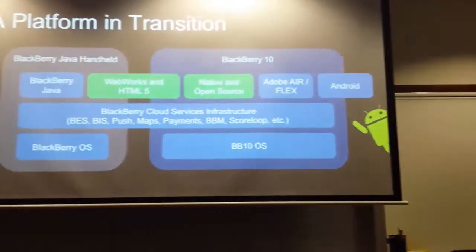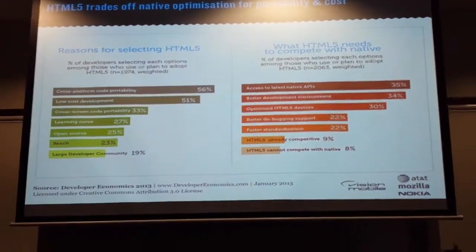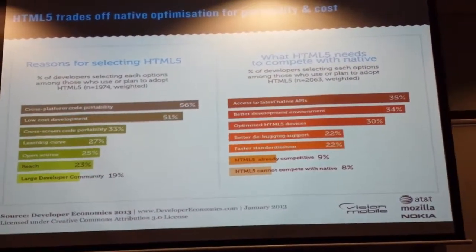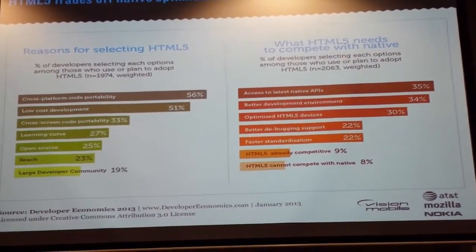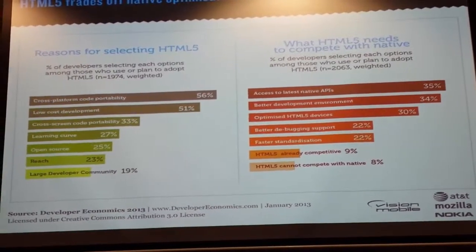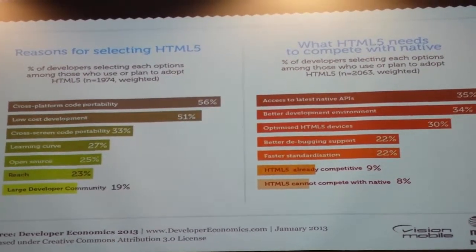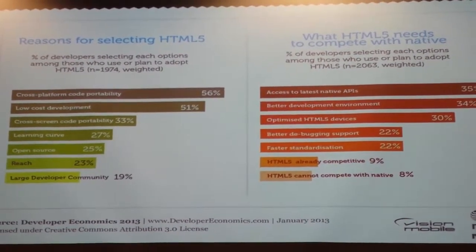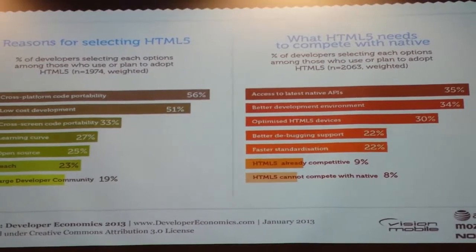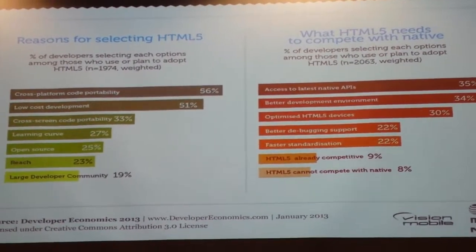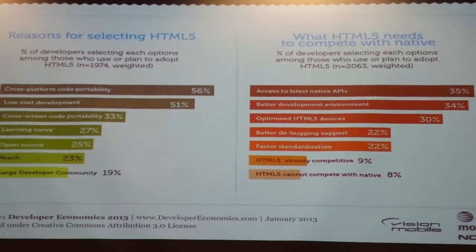Specifically today, I wanted to talk about the WebWorks platform, which gives some insight into how it's been designed to target developers. This was a study done by Developer Economics, which came out in January. Developer Economics is an industry group that does a lot of research in the US and across the world on developer sentiment. What they were looking at is basically why developers chose HTML5 for their apps, and what HTML5 needed in order to compete with native.